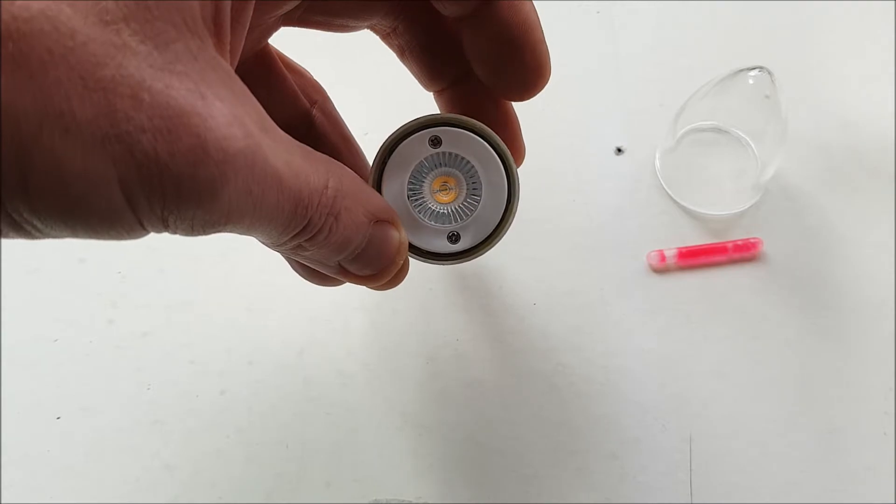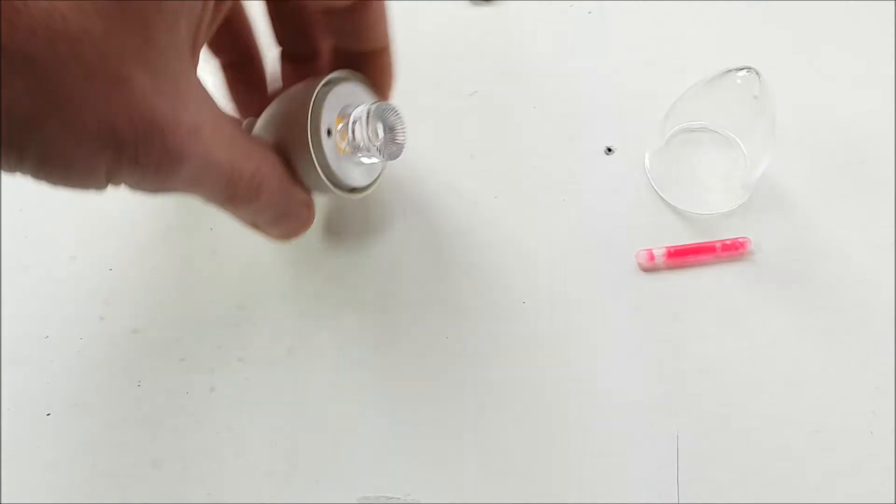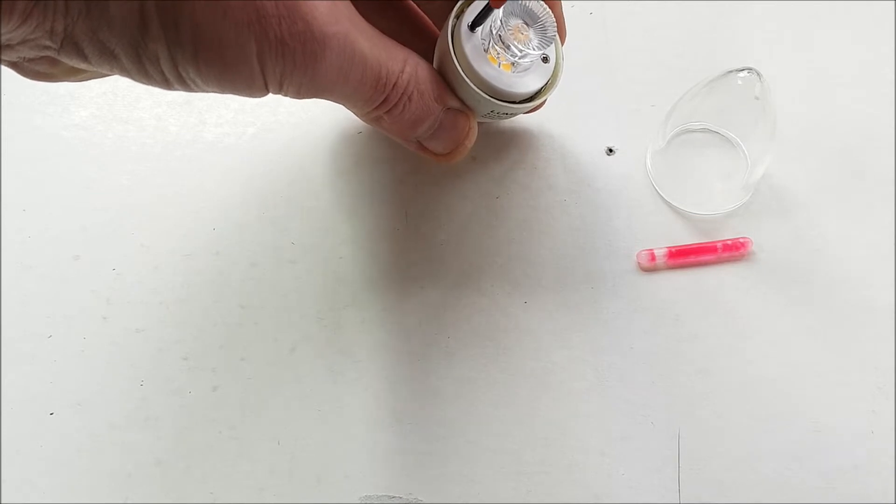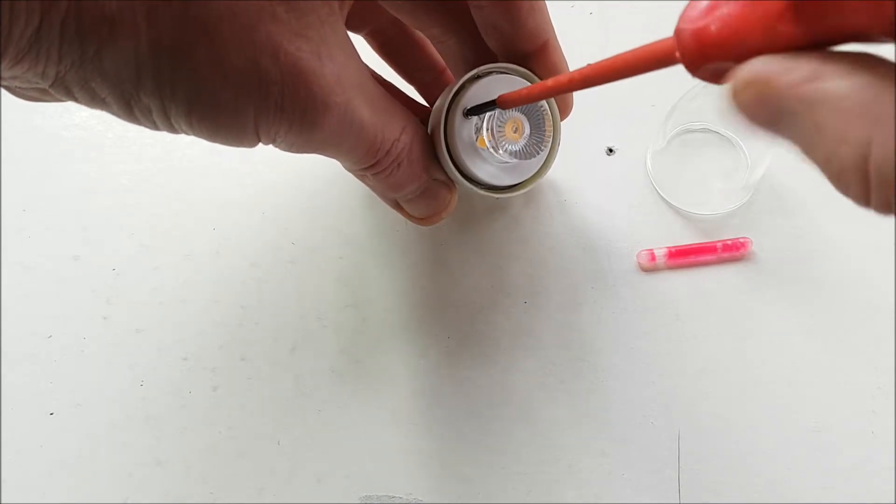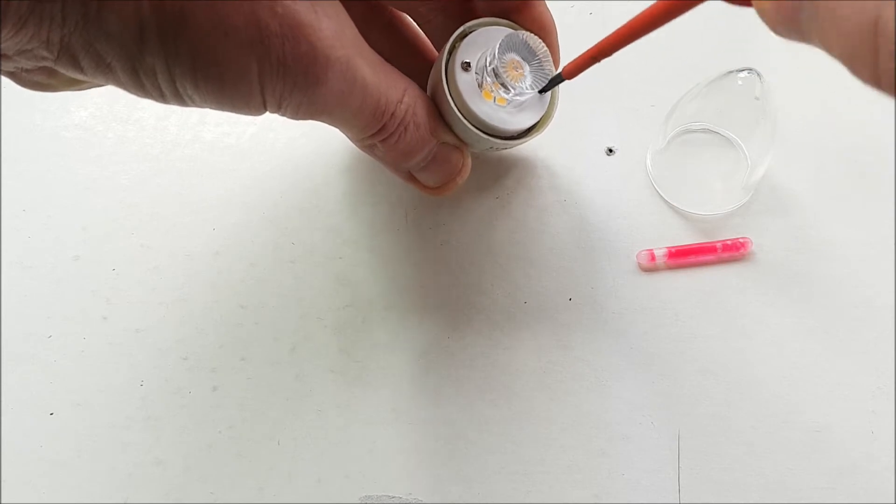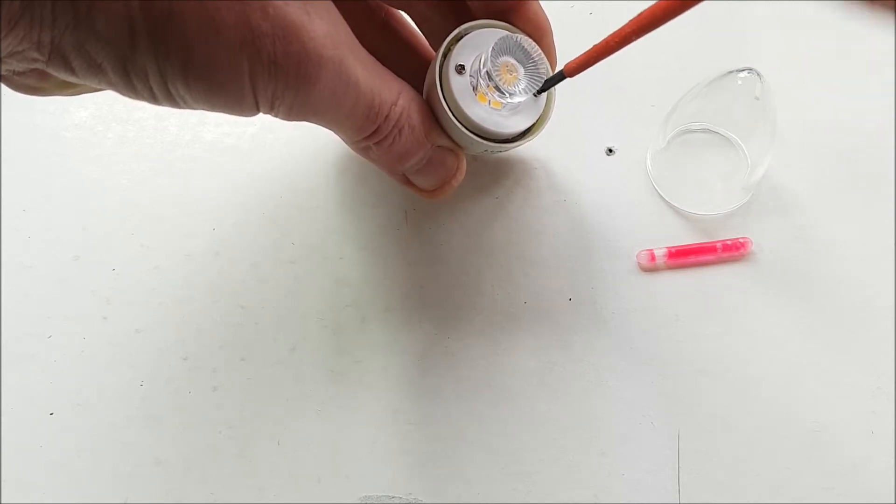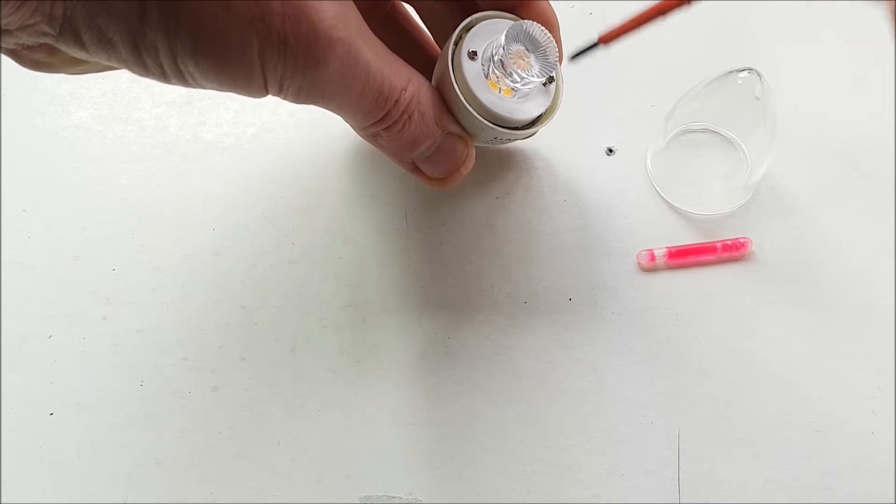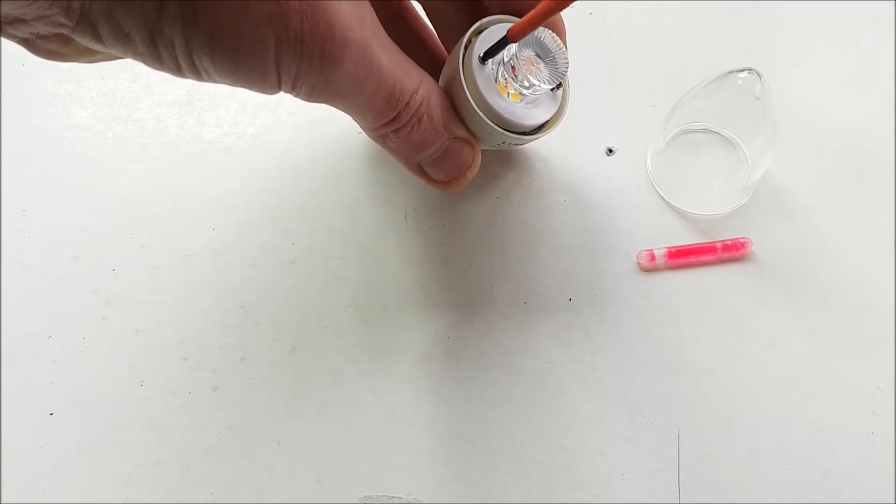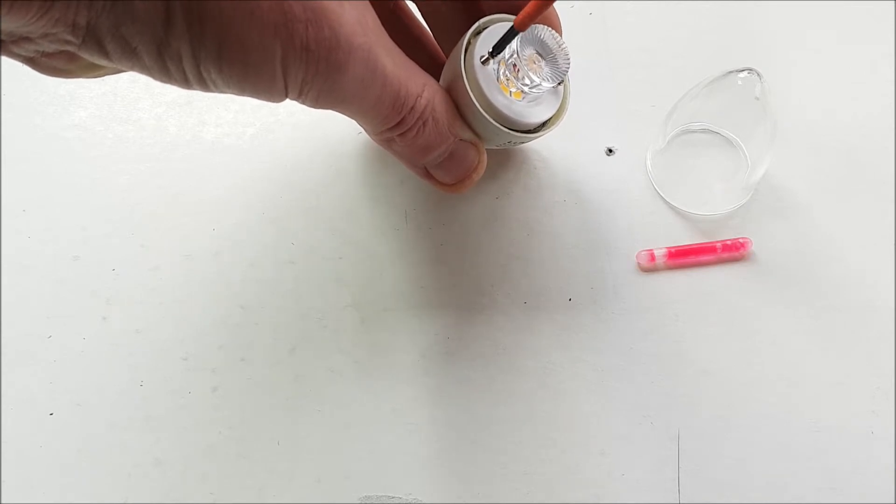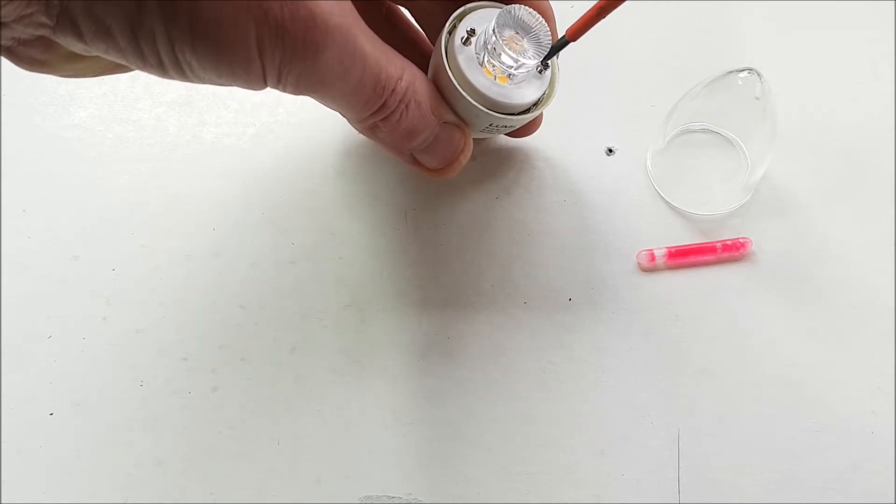Alright, so let's start by taking these little Phillips screws out. This is an LED small bayonet light bulb. I bought a batch of these last year and they've not been very good, so I've always been wanting to do something with them.